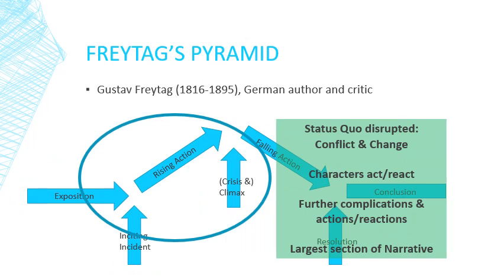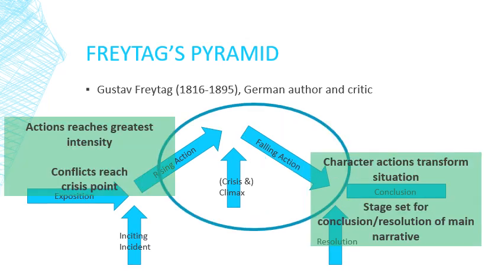The status quo is disrupted and conflict and change start to develop. This is called the rising action because we're rising towards the story's main point — the climax — and tension is being built. Conflict is being built. The characters act and react to the change, react to their conflicts with each other, and further complications and actions and reactions may result. This is usually the largest section of the narrative — the story we really want to read. We want to see how people react and what complications ensue when something dramatic or tragic happens.